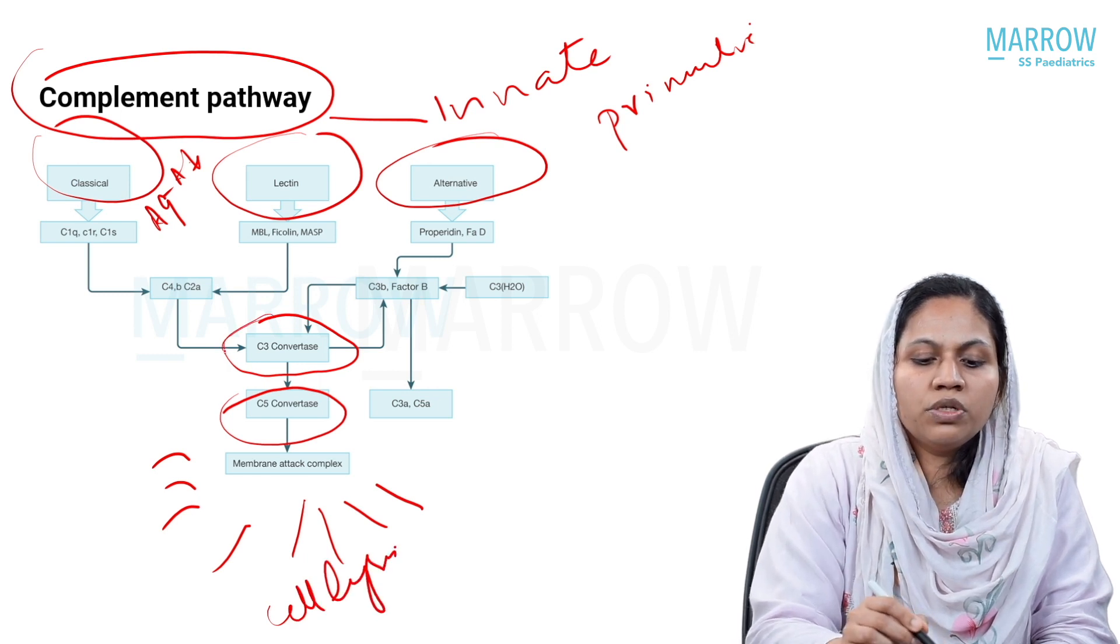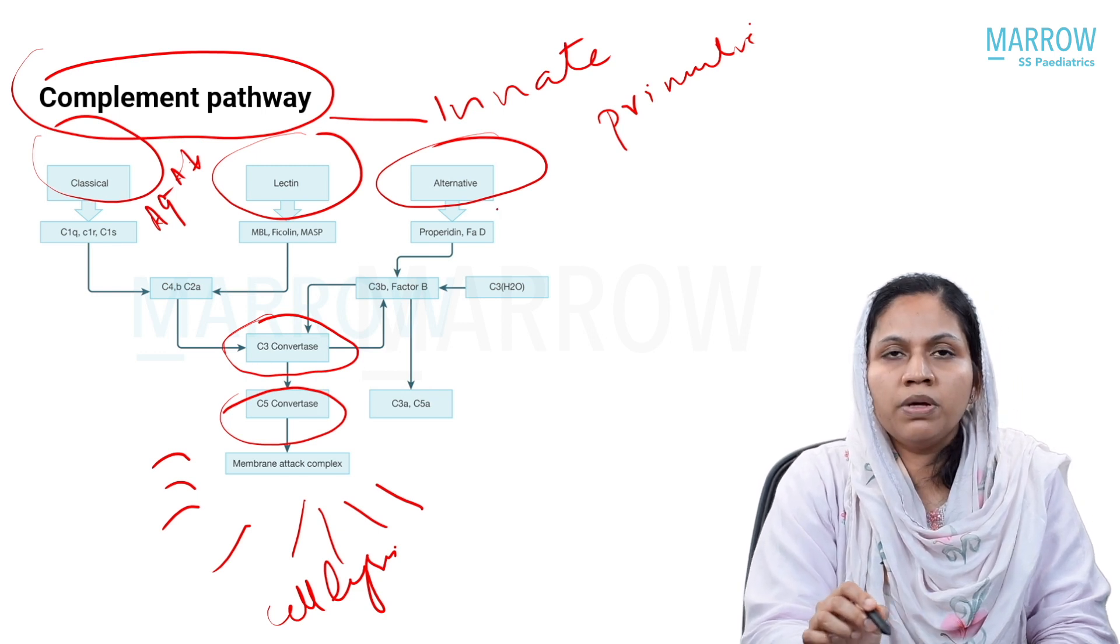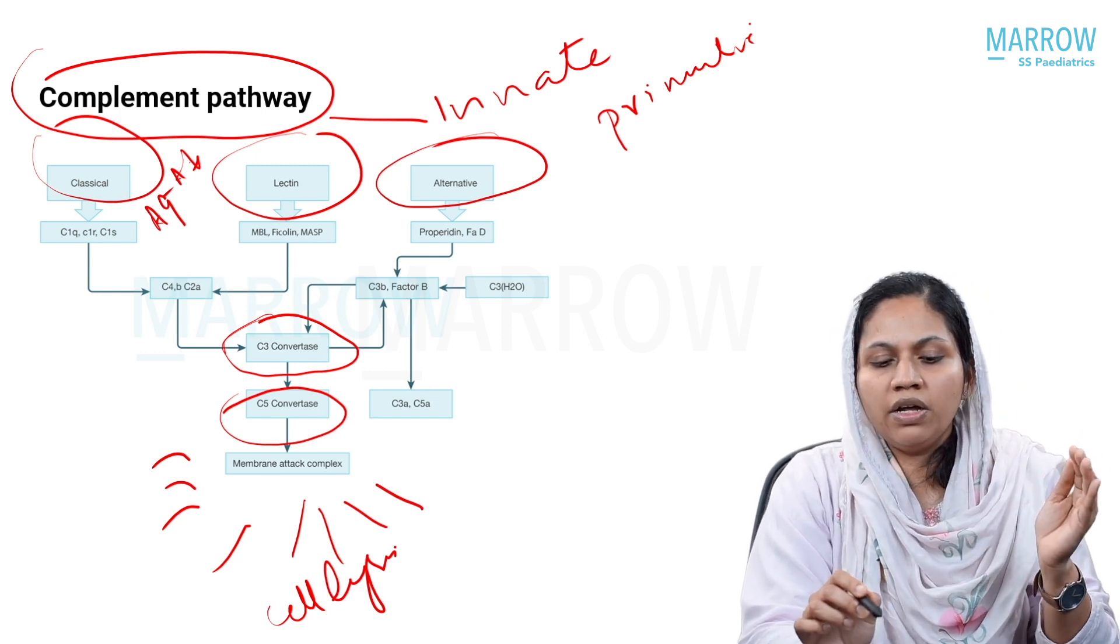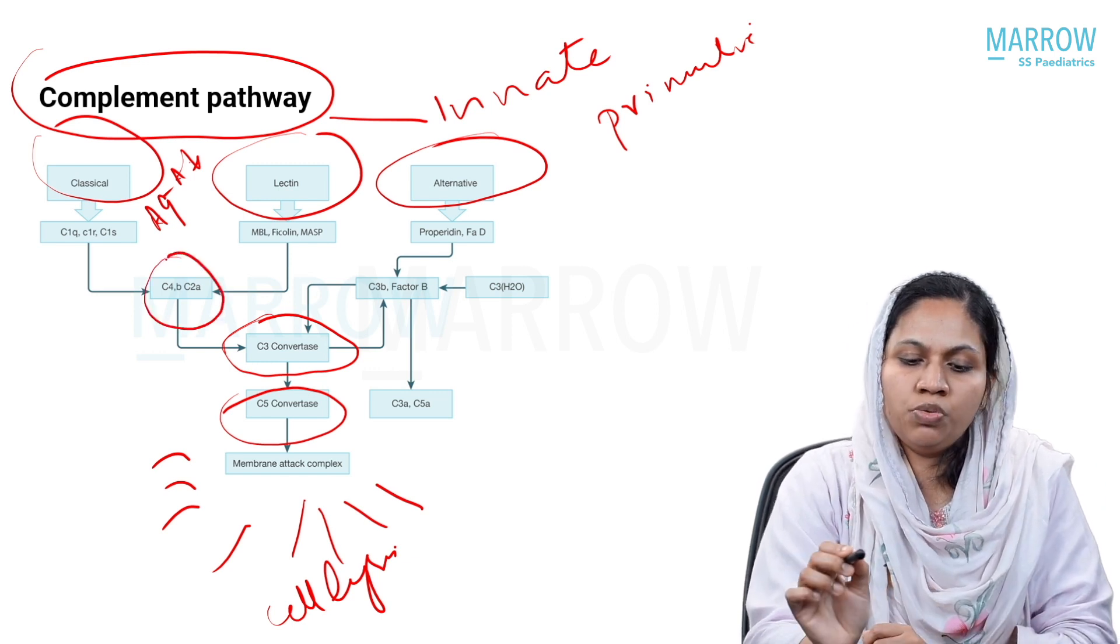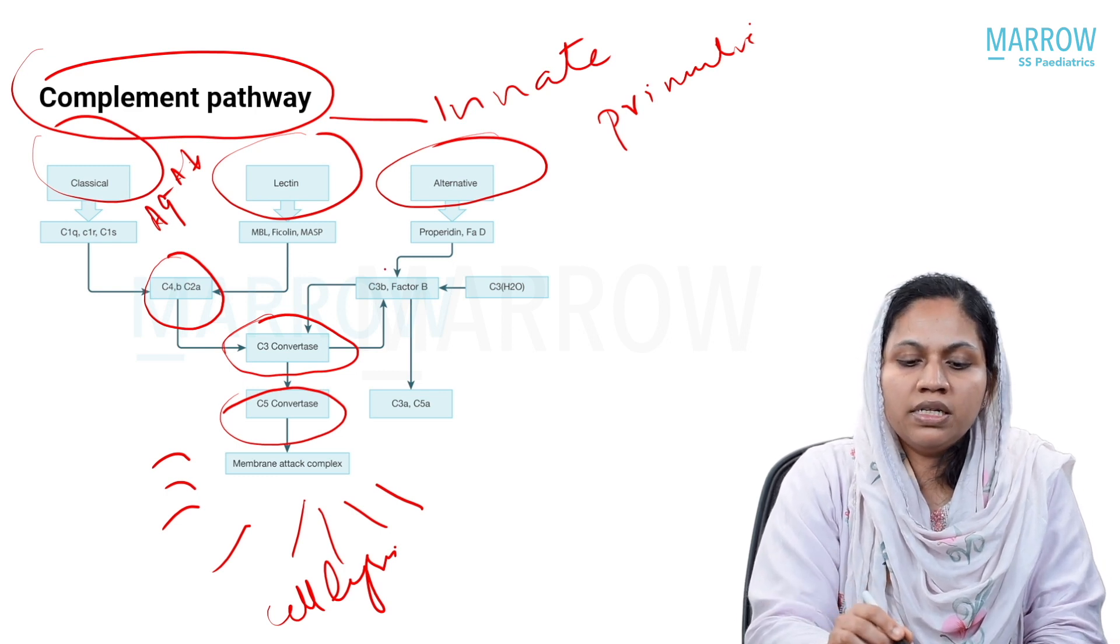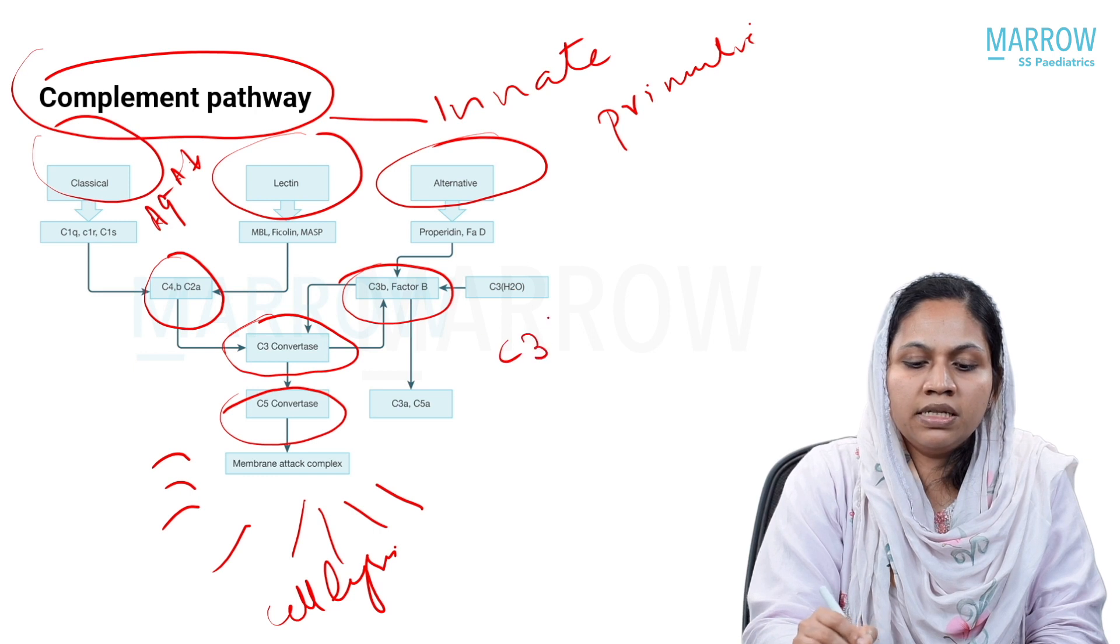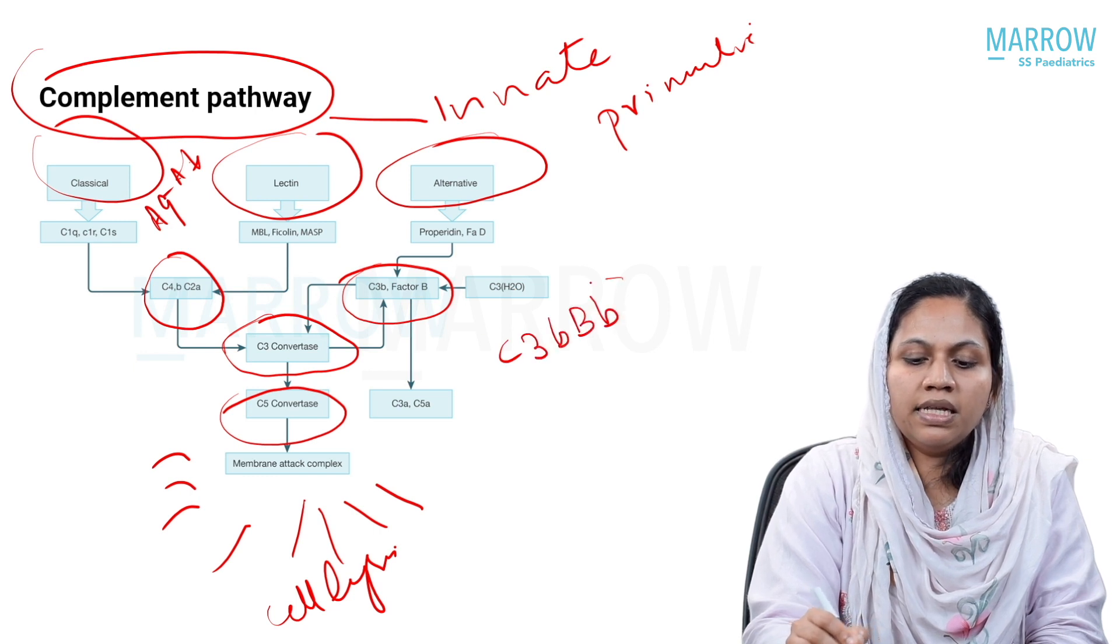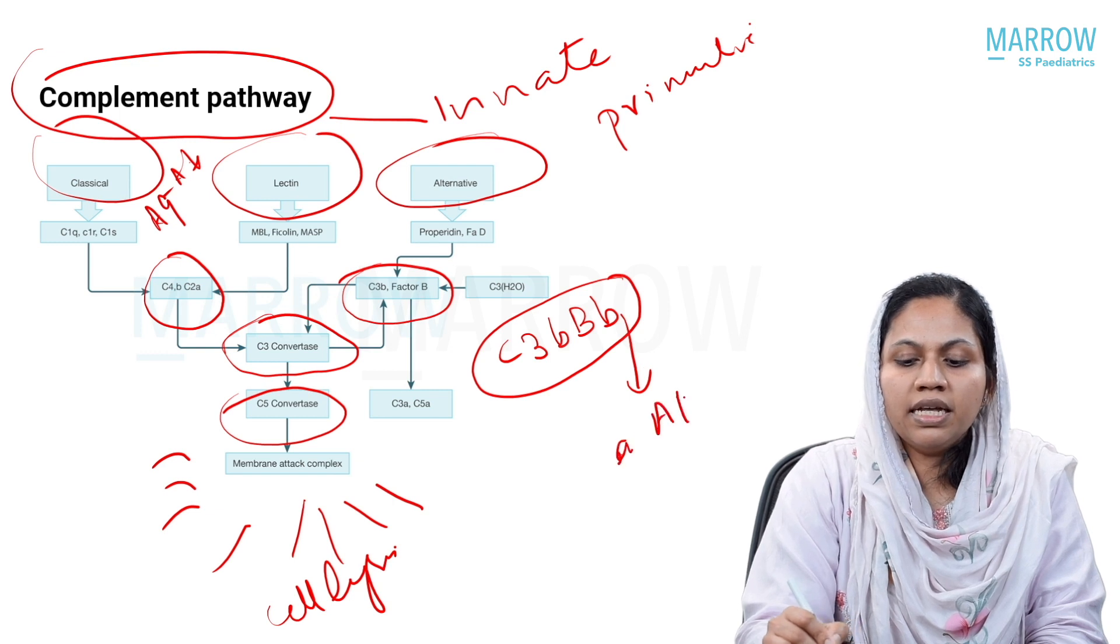The C3 convertase formation is different for the classical, lectin, and alternative pathways. It is similar for classical and lectin pathway where the C3 convertase is C4bC2a, whereas for the alternative pathway it is a different C3 convertase, that is C3bBb. This is the alternative pathway C3 convertase, and this is the first most important step.